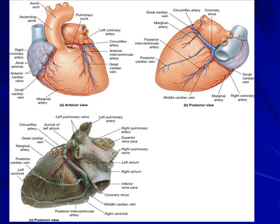The circulatory system — we talked first about the coronary arteries. You should be able to identify the coronary arteries in an anatomical location on the heart. I talked about the left coronary artery, sometimes referred to as the left main artery. It gives off branches to the anterior intraventricular artery, sometimes referred to as the left anterior descending artery.